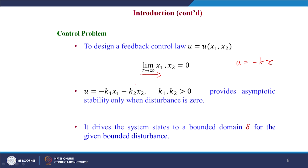Considering the state feedback control law for this two-state system, it is u = -k₁x₁ - k₂x₂, where k₁ > 0 and k₂ > 0, which provides asymptotic stability only when the disturbance F(x₁, x₂, t) is 0.